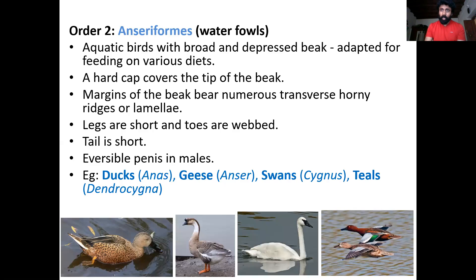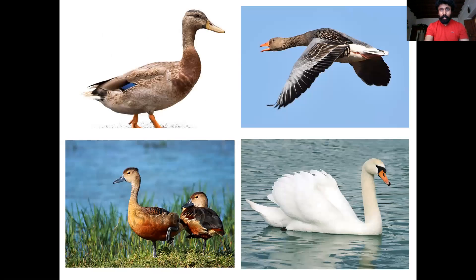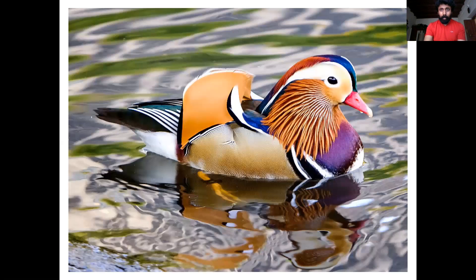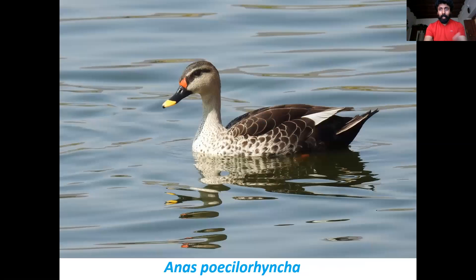The second order is Anseriformes, which includes waterfowl or water birds — very popular birds like ducks, geese, swans, and teals, all coming under this order. You can see the beautiful image of swans with its seasonal monogamy and long pair bond. The very beautiful Mandarin duck of China is also shown. The example for Anseriformes is Anas.